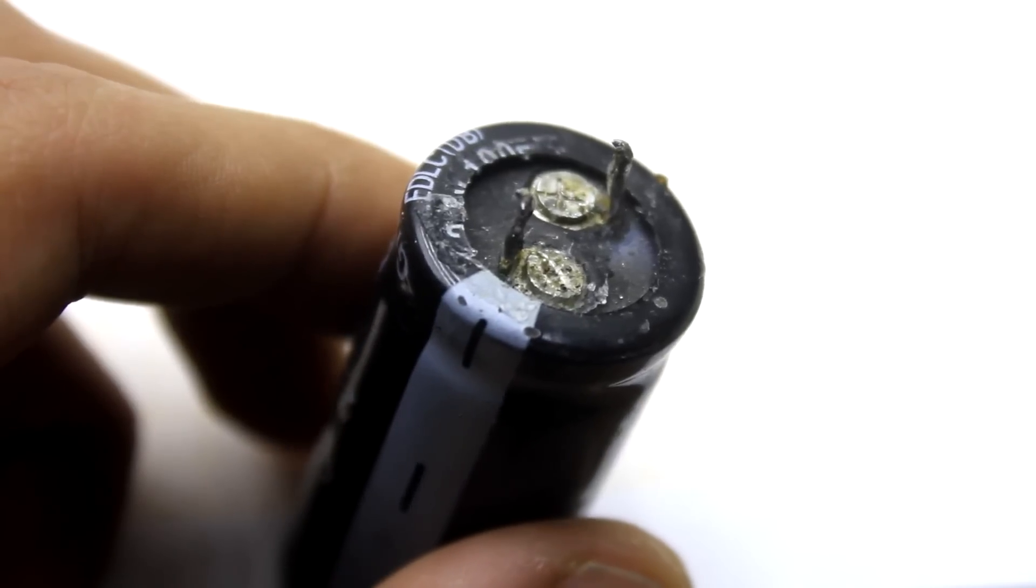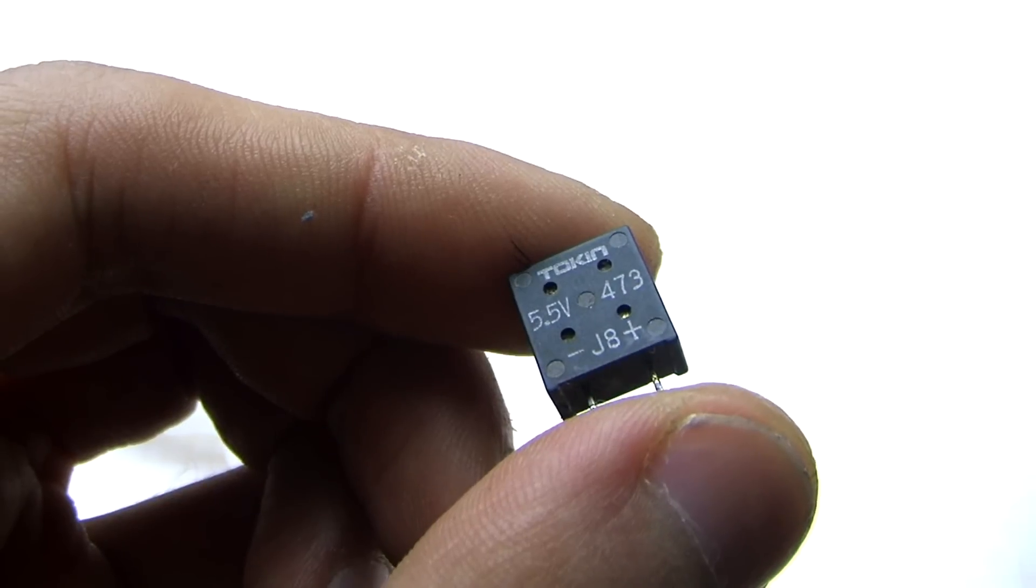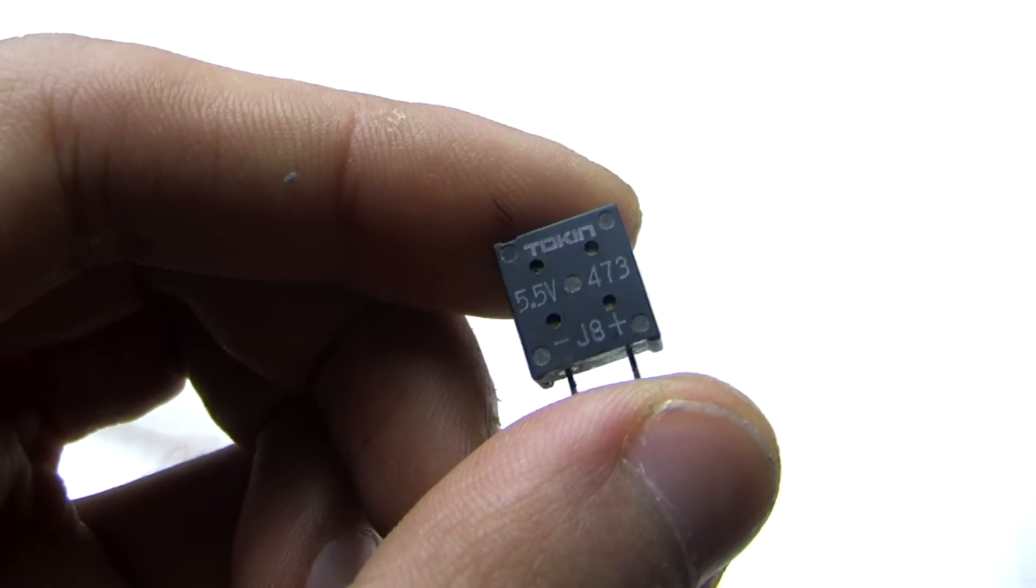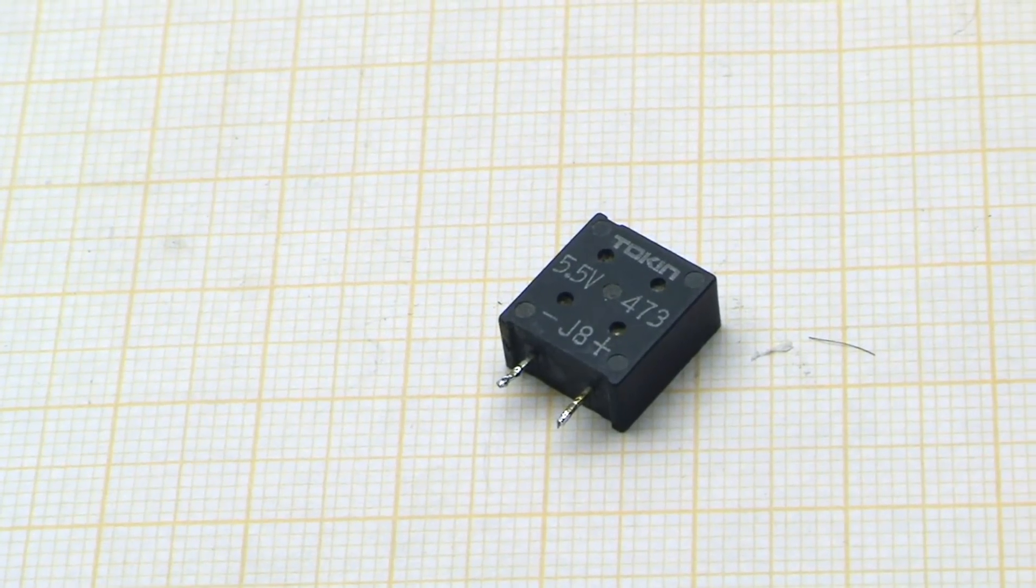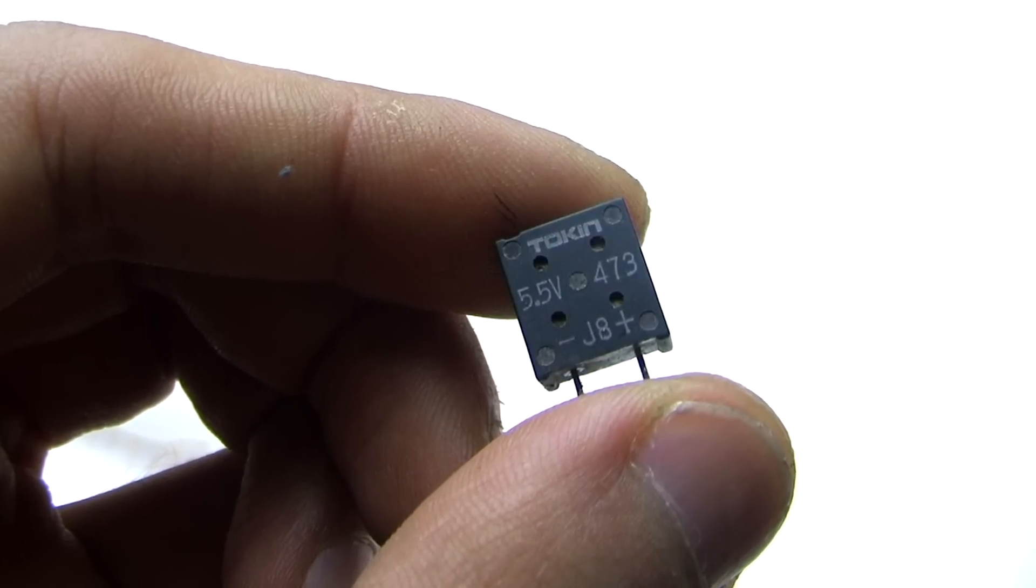In particular, ionister's working voltage can be 2.7 volts. In my case, it is used an ionister with a capacity of 0.047 Farad with a voltage of 5.5 volts. In fact, inside are two ionisters connected in series.